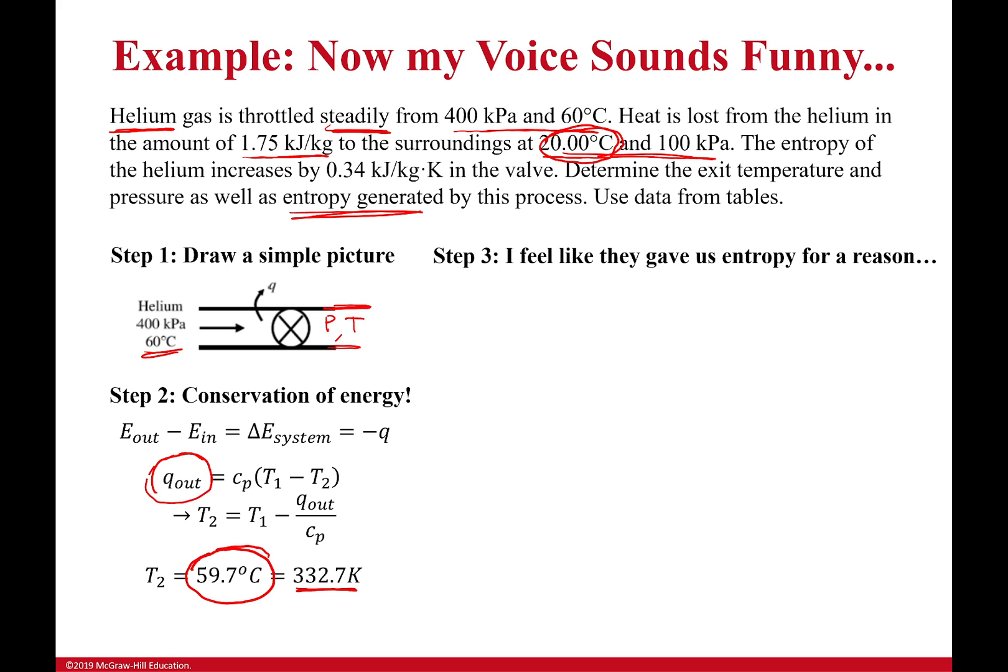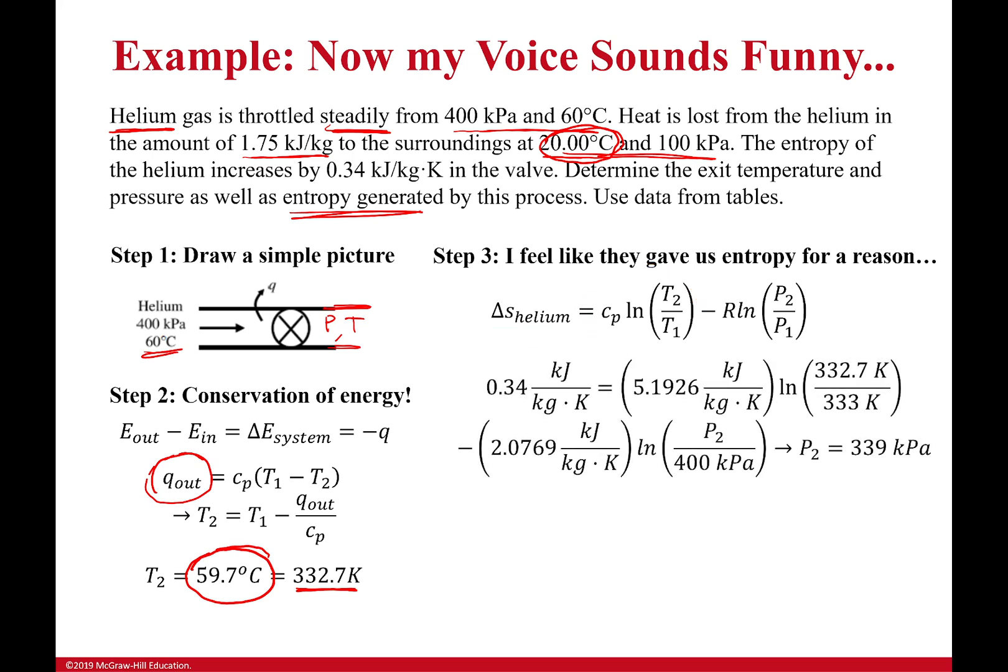They gave us that entropy generation for a reason. To figure out the pressure after this valve, we're going to use that entropy generation. The change in entropy for an ideal gas is equal to this equation: ΔS = cp·ln(T2/T1) - R·ln(P2/P1). I know my specific gas constant from the tables, so I can solve for my pressure. I plug that all in, and with some algebra...